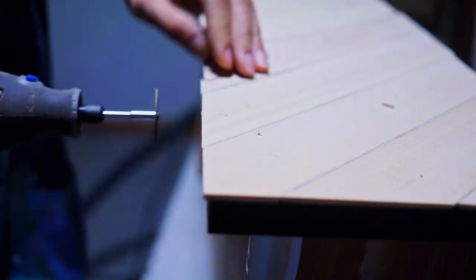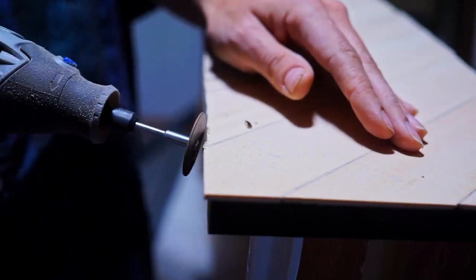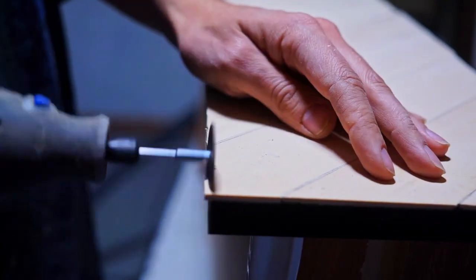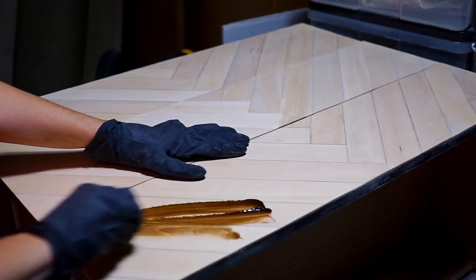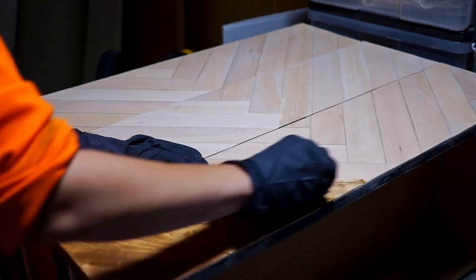To trim the edges I used the Dremel tool. That's the easiest way for me. After trimming I sanded down the old edges and I was finally ready to stain. Remember I told you I wanted the pattern to go through all three drawers? That's why I'm staining all three of them together.